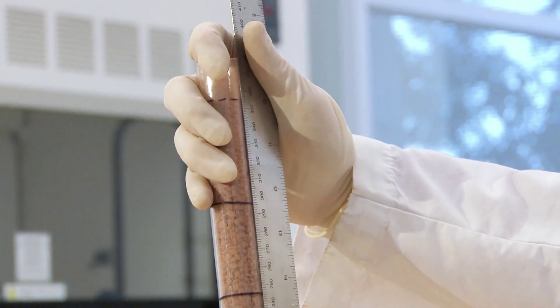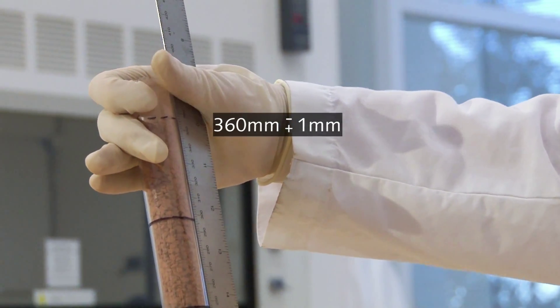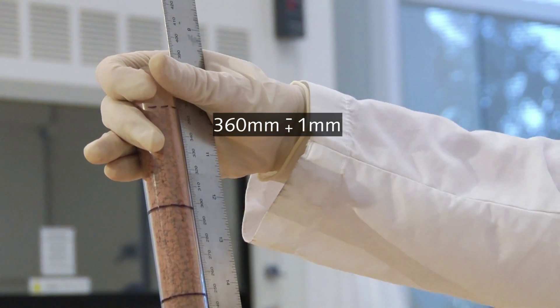If not, empty the column and repeat the filling procedure. The compaction of the granular material is very important in order to obtain similar capillary networks.